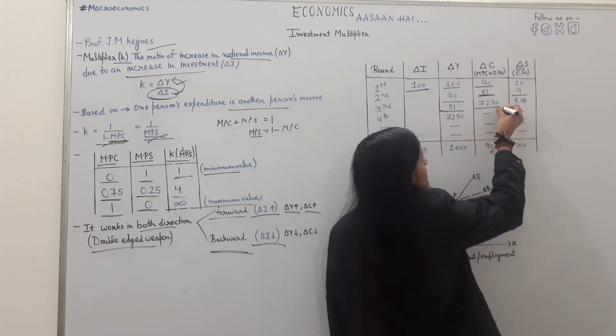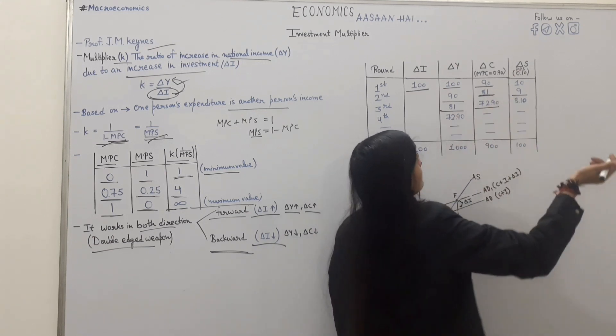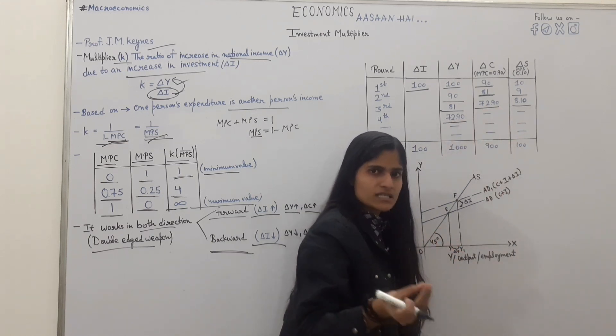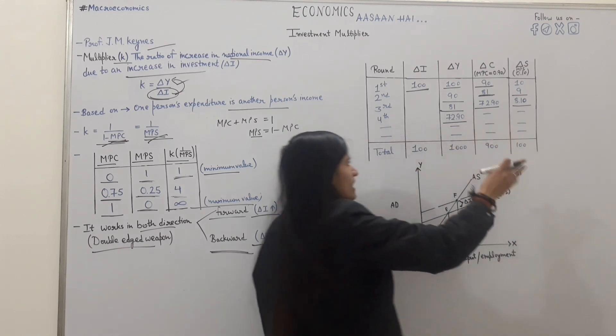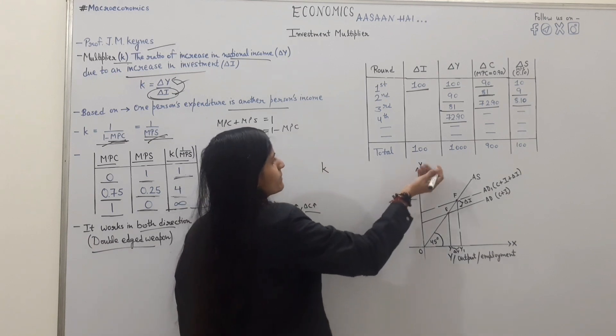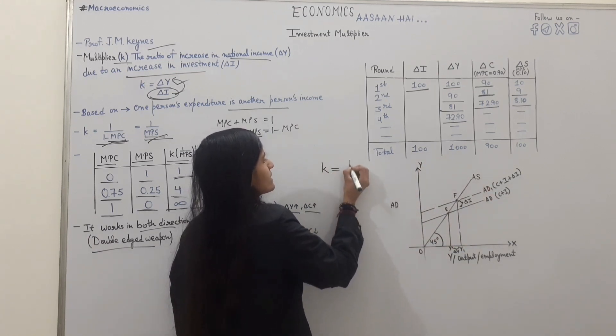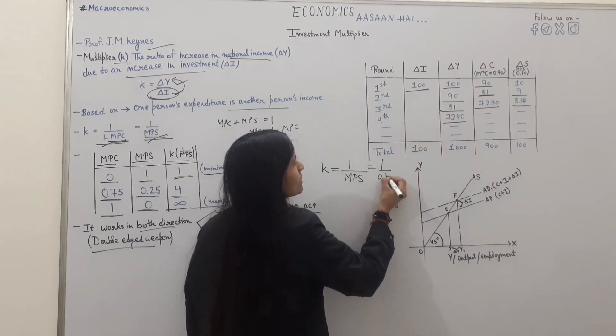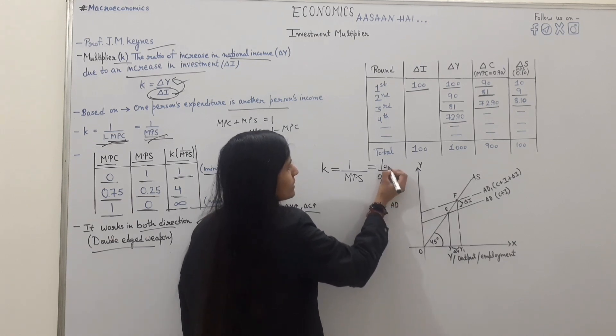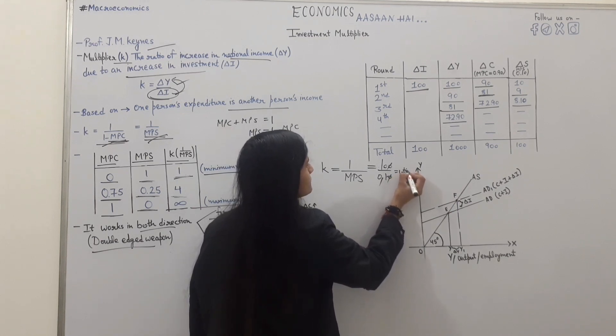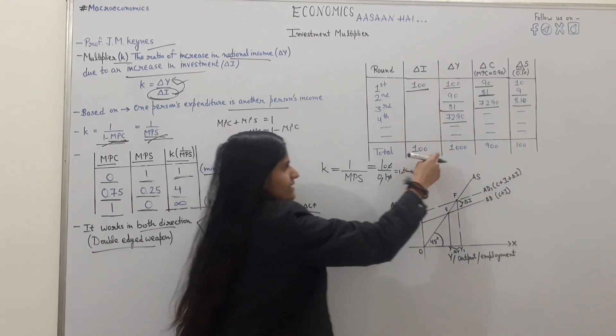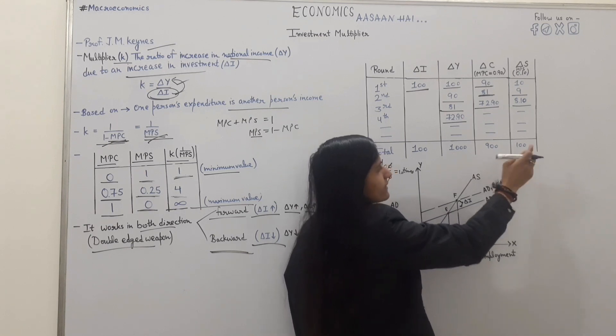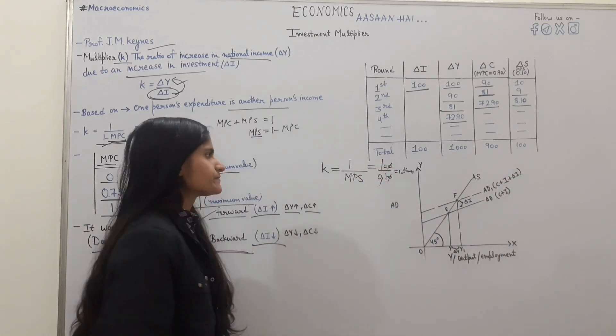Then 90 percent is 72.90 consume, 8.10 save. Then 72.90, then one person expenditure is another person income in the process. K value how to calculate? Total K value 1 upon MPS. MPS 0.10, here 10. Investment 100.